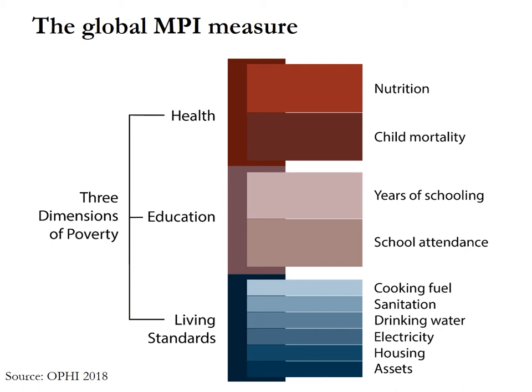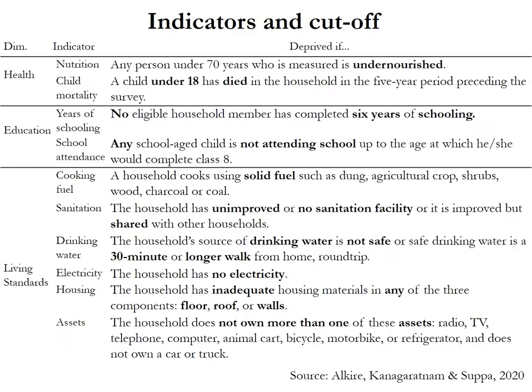The MPI has two indicators for health: nutrition and child mortality. It has two indicators under education: years of schooling and school attendance. Finally, it has six indicators for living standards: cooking fuel, sanitation, drinking water, electricity, housing, and assets. The Global MPI has a nested weight structure — indicators within each dimension are equally weighted, meaning health and education indicators receive more weight than individual living standard indicators.